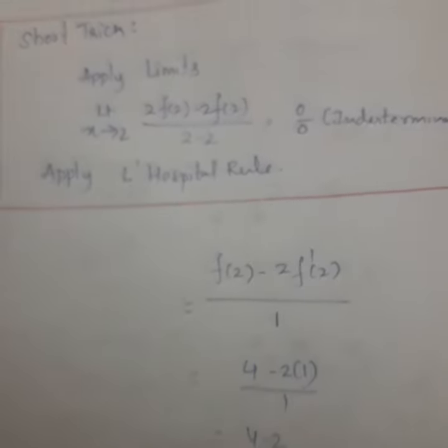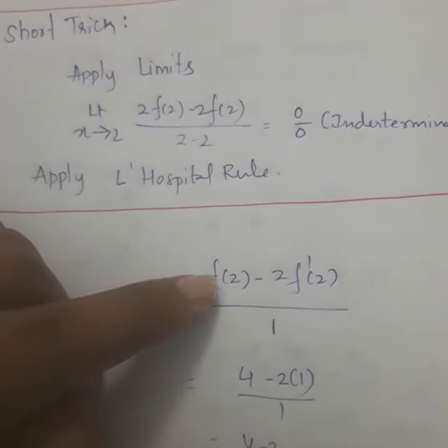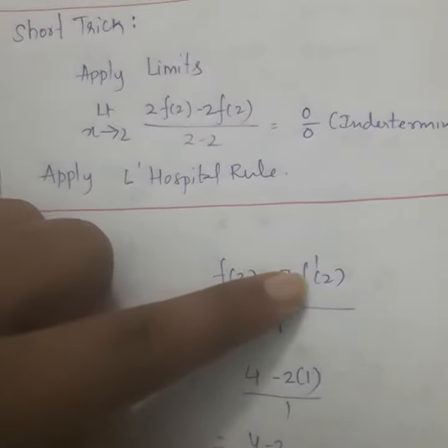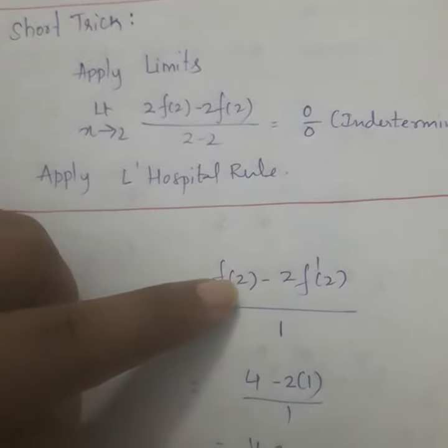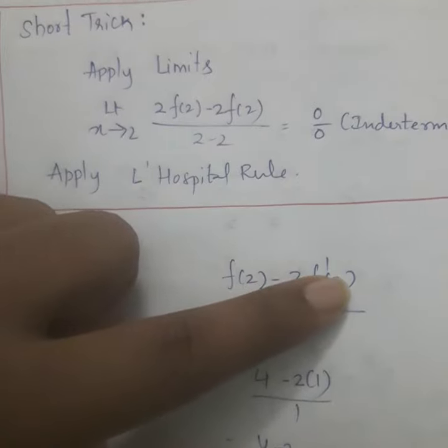When I am differentiating the numerator, I am getting answer as f of x minus 2 times f dash of x. That is, here x value I am taking as 2, so I am getting f of 2 minus 2 times f dash of 2.